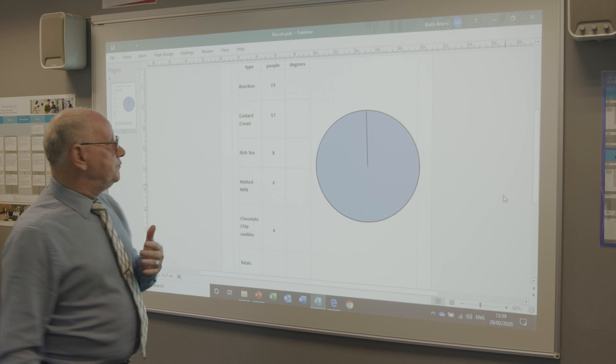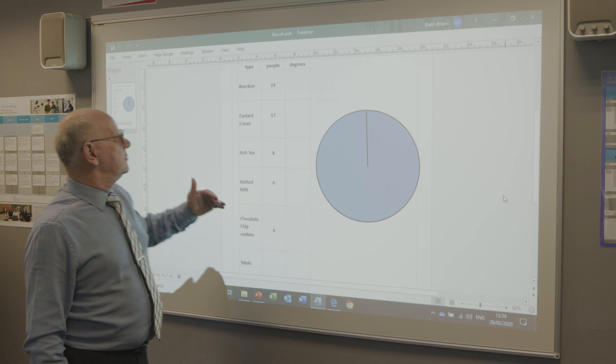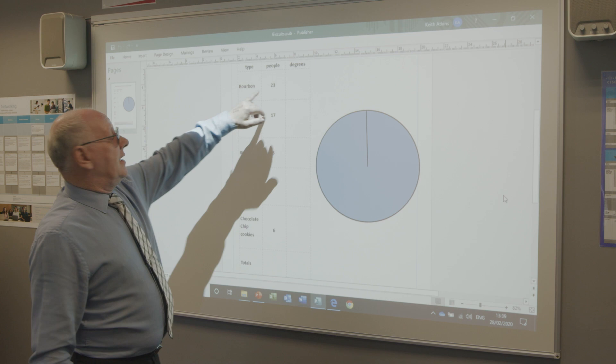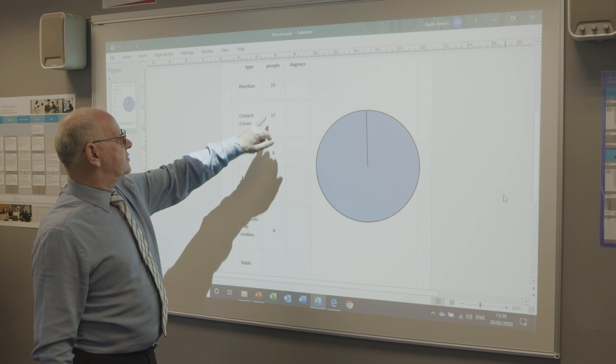So you'll get a table of some sort. This is people's favourite biscuits. We've got bourbon, we've got custard cream, rich tea, malted milk, chocolate chip cookies. I like all that.